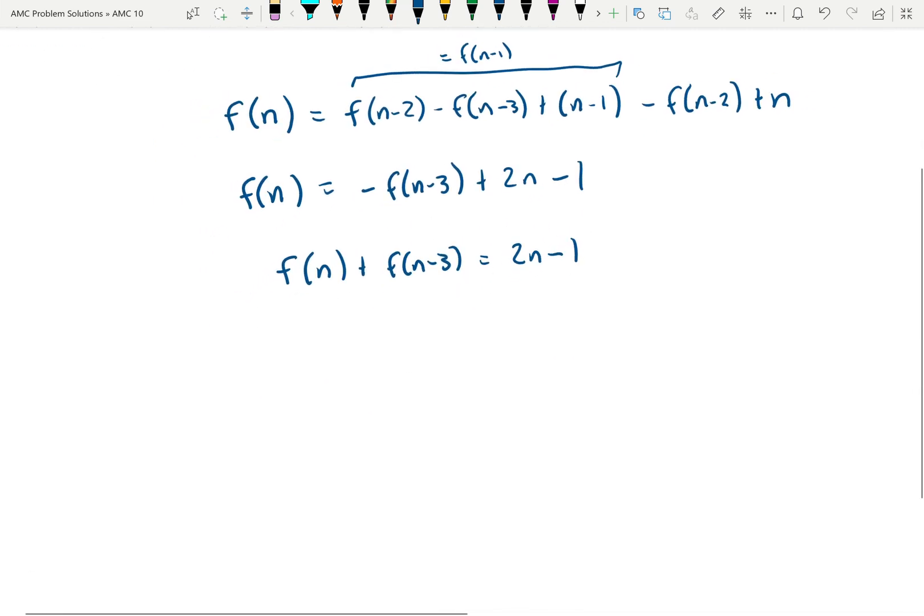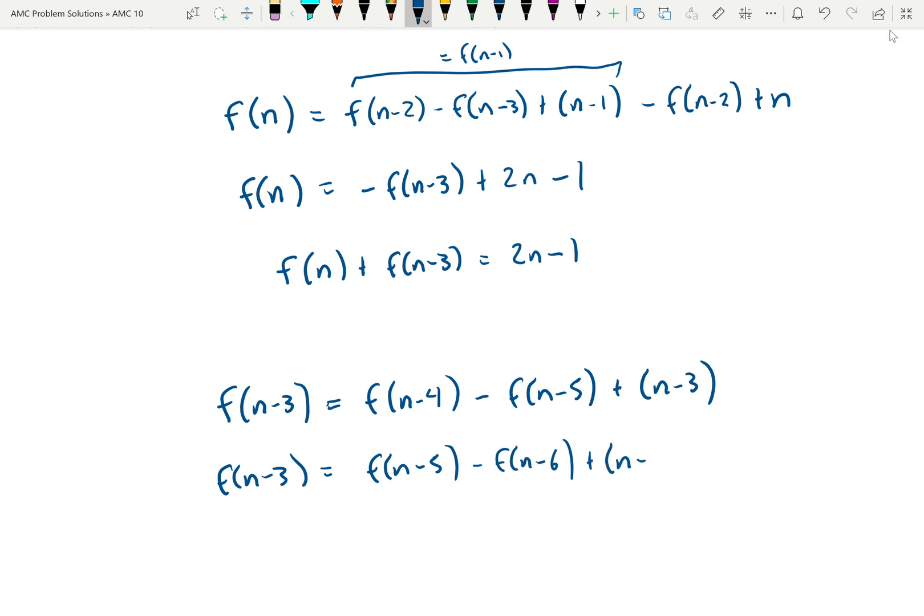So now we're going to do some work on f(n-3) to come up with another equation here. So we take f(n-3). That's equal to f(n-4) - f(n-5) + (n-3). So this can be written as f(n-4) is the same thing as f(n-5) - f(n-6) + (n-4). So that's just rewriting that.